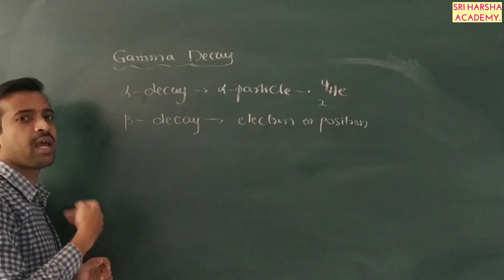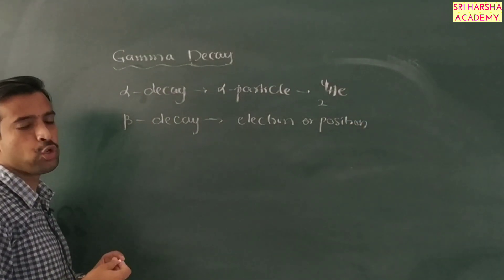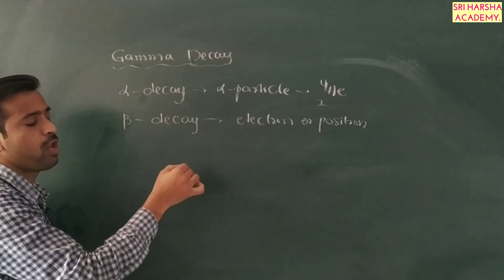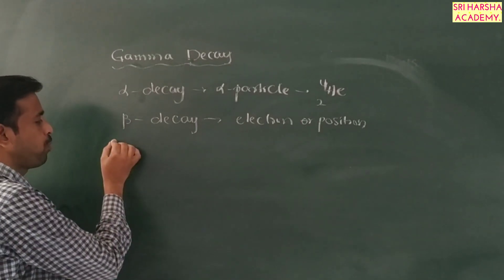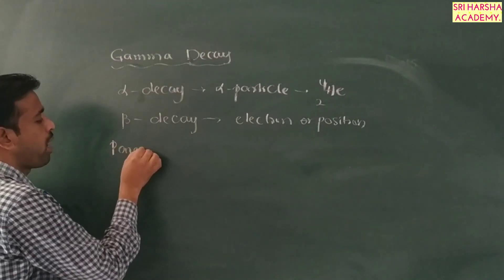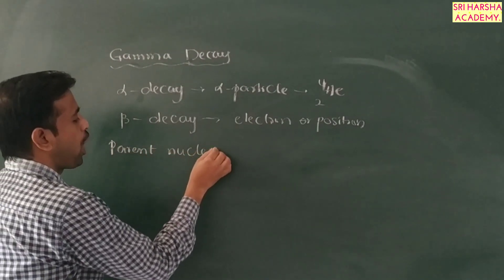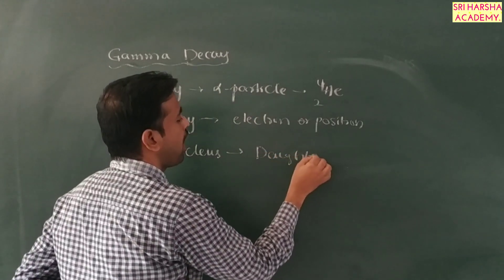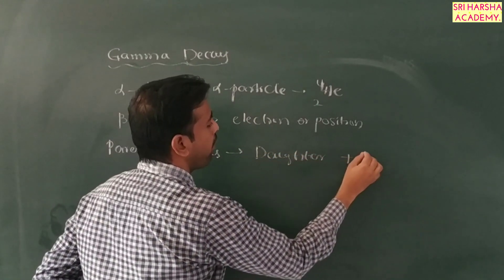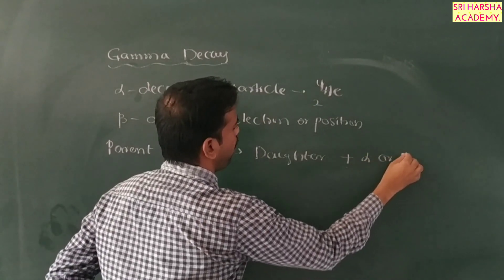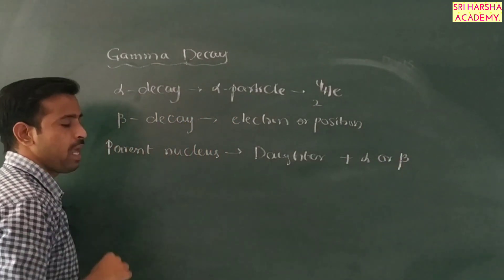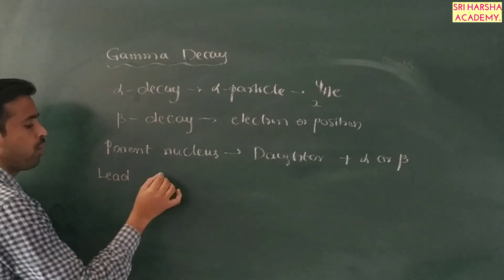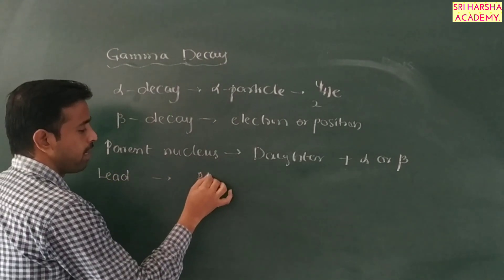In gamma decay, the gamma particle cannot come out directly from the parent nucleus. The gamma particle comes out from the daughter nucleus. When the parent nucleus changes into the daughter nucleus, it must first emit an alpha particle or a beta particle.